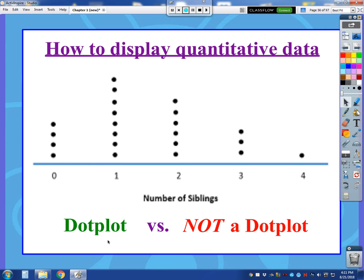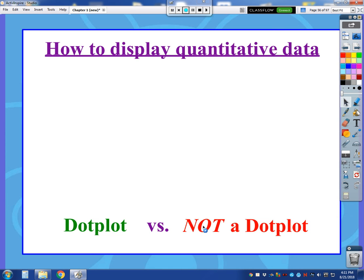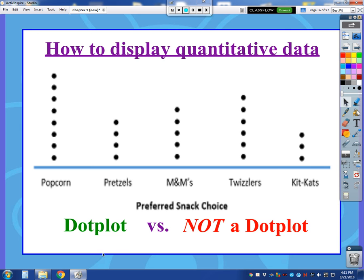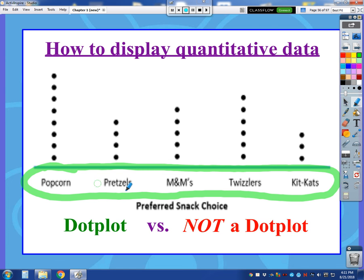Now I want to show you an example of something that's not a dot plot that might look a lot like a dot plot. You might go, but these are dots and this is a plot, so why isn't this a dot plot? Well, look at the data that we have here. The data is about preferred snack choice. This is not quantitative data. This is categorical data.